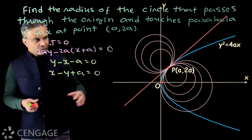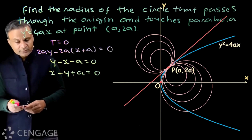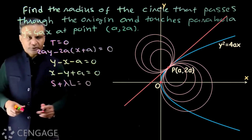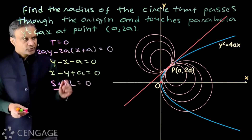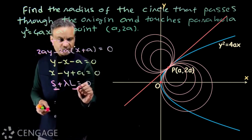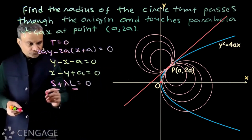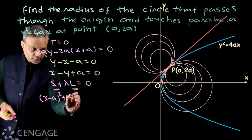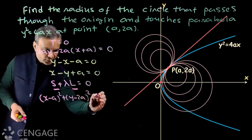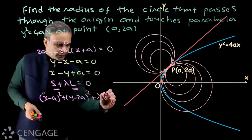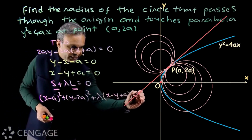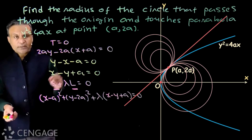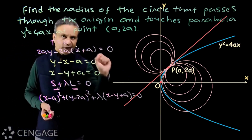The equation of this family of circles is given by S + λL = 0, where S = 0 is the equation of the point circle at point P and L = 0 is the equation of the tangent line. So this expression becomes: (x - a)² + (y - 2a)² + λ(x - y + a) = 0. This is the equation of the family of circles touching the tangent line at point P.